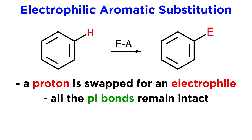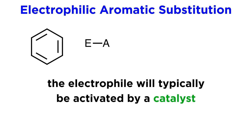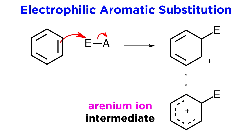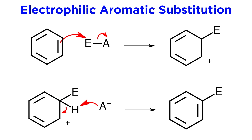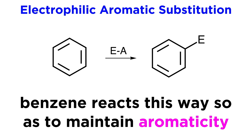This will proceed by a different mechanism than addition, so let's learn the general mechanism for any EAS reaction. When benzene interacts with some electrophile, which will typically be activated by some catalyst, a pi bond will act as a nucleophile and attack the electrophile, whatever it may be. This will generate the arenium ion intermediate, which is resonance stabilized. Then something in solution will extract the proton that is specifically on the carbon atom that now bears the electrophile, and neutralize this cation, thereby restoring aromaticity.